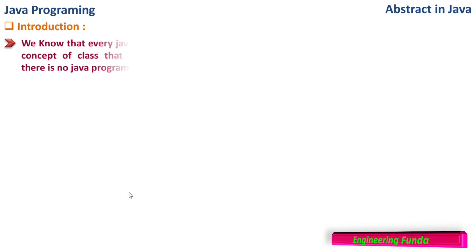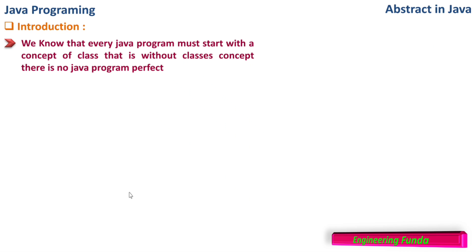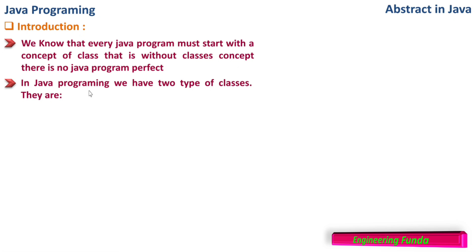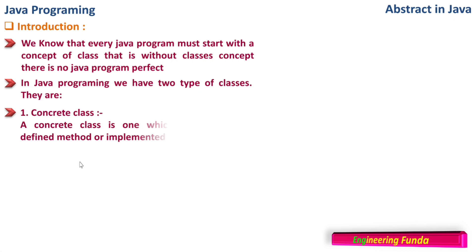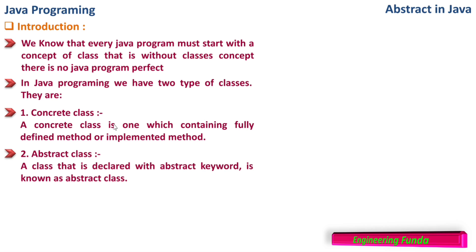We know that every Java program must start with a concept of class — without classes there is no Java program. In Java programming we have two types of classes. The first is a concrete class, which contains fully defined or implemented methods. This type of class we have seen throughout the lecture series. The second is the abstract class.